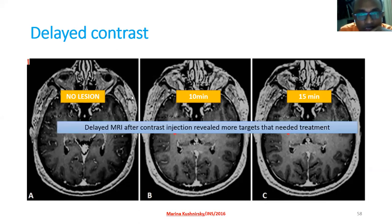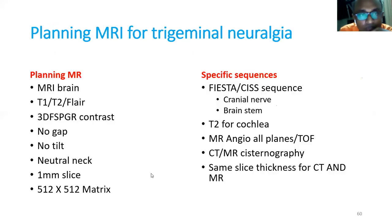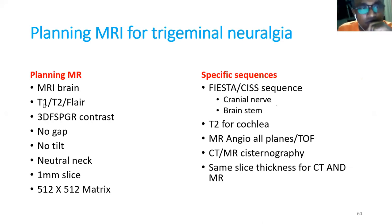Another contrast option is gadobutrol (Gadovist), which provides more contrast and better visualization compared to standard gadolinium. This is what has been told about imaging for neural metastasis. For planning MRI in trigeminal neuralgia, the basic sequences apply, but specific sequences include FIESTA or CISS sequence for cranial nerve and brainstem, T2 for cochlea, MR angiography to see the vessels, CT cisternography, and same slice thickness should be requested.